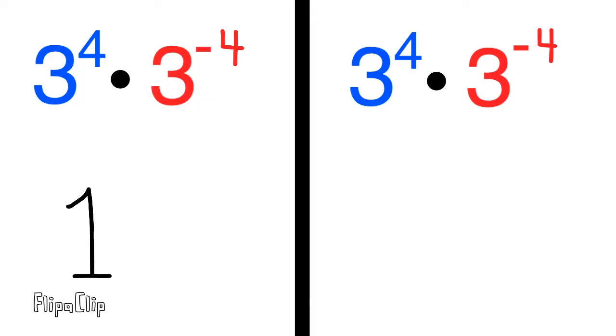Let me use the right-hand side of the screen to show you why. 3 to the power of 4, that's a positive exponent, so that stays on top of the fraction.